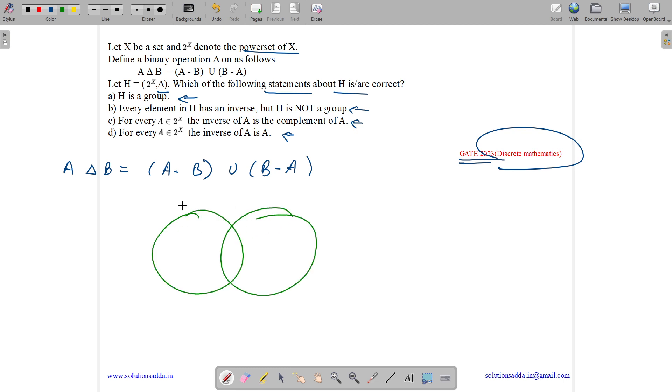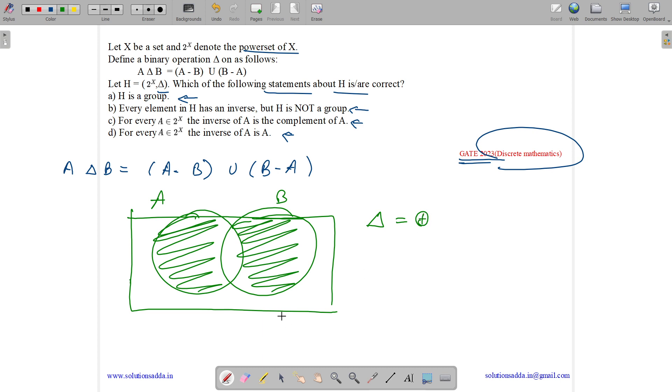Suppose we have A like this and B like this. Then what is A minus B? A minus B is this region. And what is B minus A? B minus A is this region. So we can easily see that this operation delta is equal to our XOR operation. And let us see what all things this delta will satisfy.